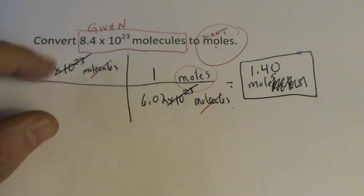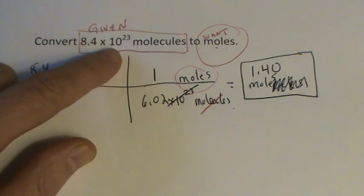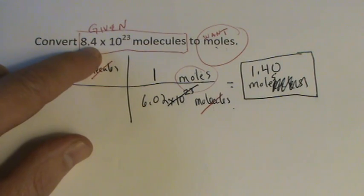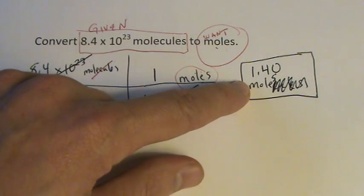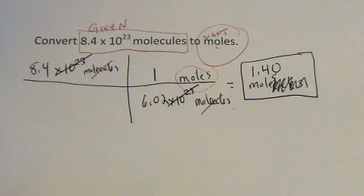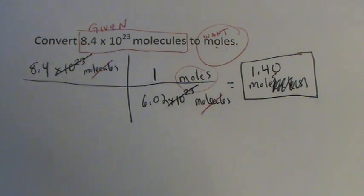That makes sense because if 6.02 times 10 to the 23rd is 1 mole, this is going to be a little bit more, and 1.40 is a little more than 1. So that does make sense, and we can be pretty comfortable with our final answer.